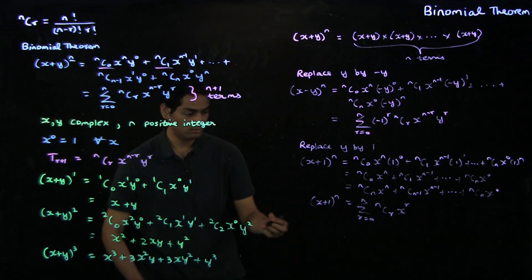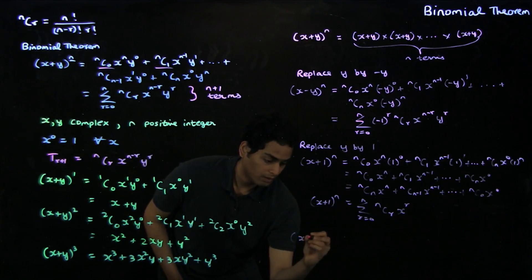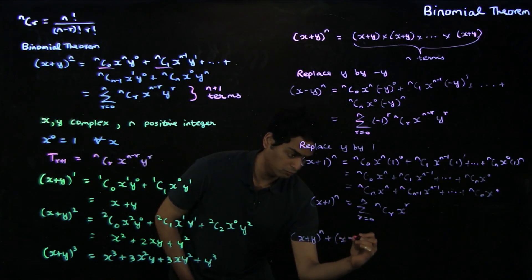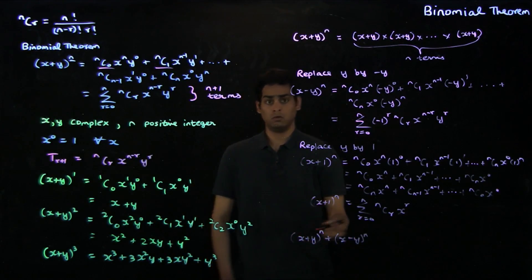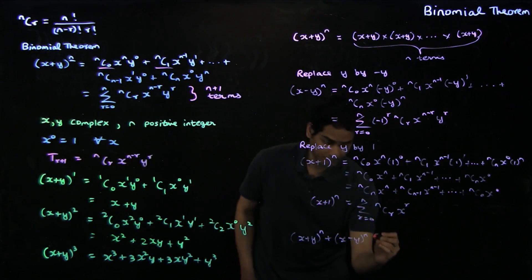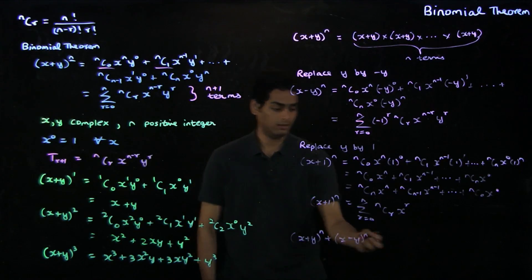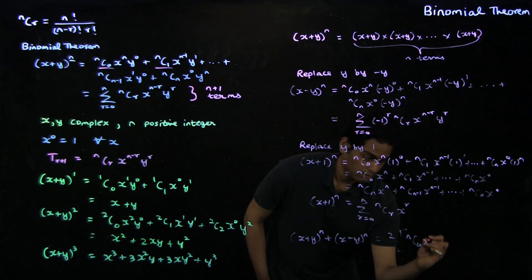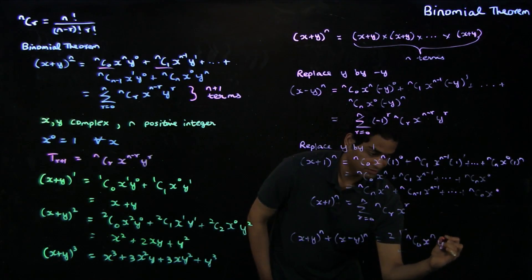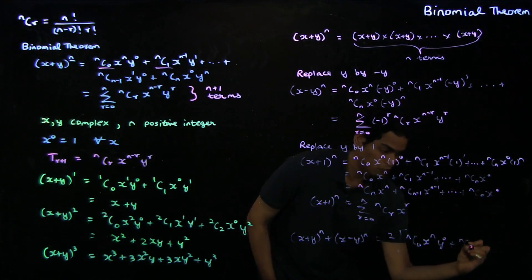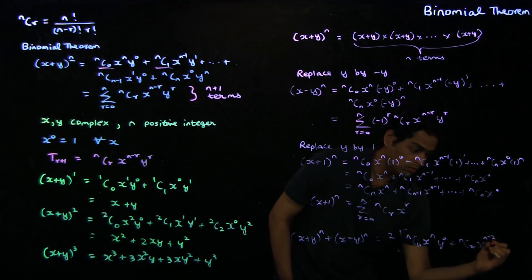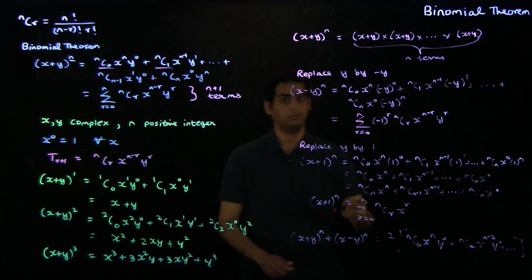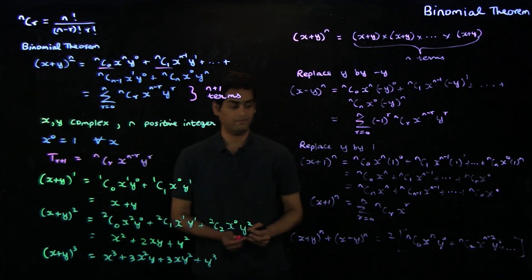You can also derive an expansion for x plus y to the n plus x minus y to the n. Applying the binomial expansion for these two separate expressions, you will get 2 times nc0 times x to the n times y to the 0, plus nc2 times x to the n minus 2 times y squared, and so on. The alternate terms cancel out, leaving you with this result.